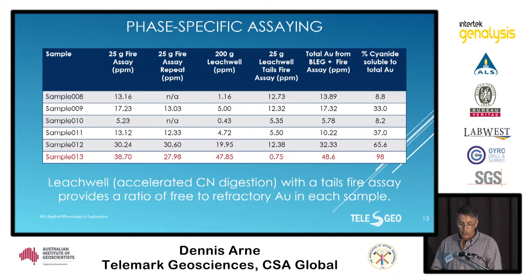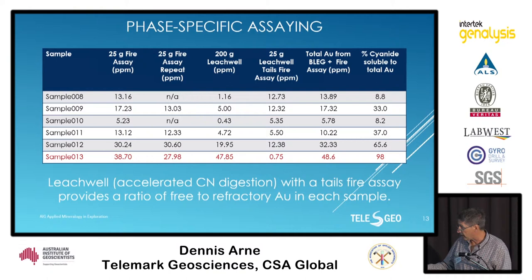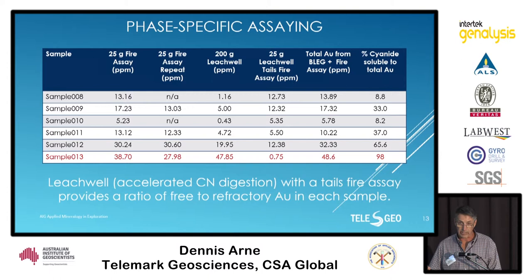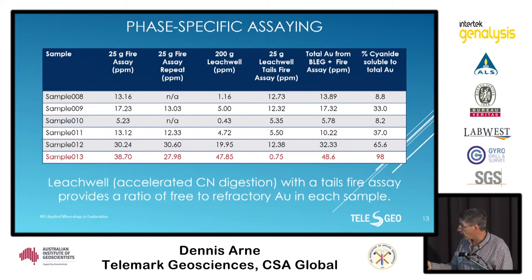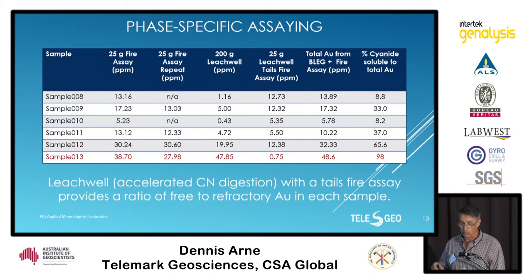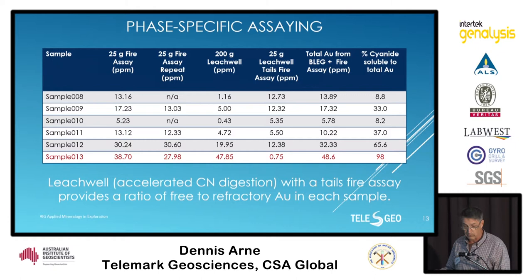One thing we did on this project was leach well analysis. We have the standard original 25-gram fire assay and in some cases a repeat, but then we did a 200-gram accelerated cyanide leach — a leach well — and in addition a 25-gram fire assay of the tails. You can combine those two values to get a complete gold value for a 200-gram sample: better precision due to the bulk sample, plus the percentage of cyanide-soluble gold, which varies considerably from less than 10% to as much as 98%. Some samples from the bulk leach well analysis also gave slightly higher grade than the original 25-gram fire assays.